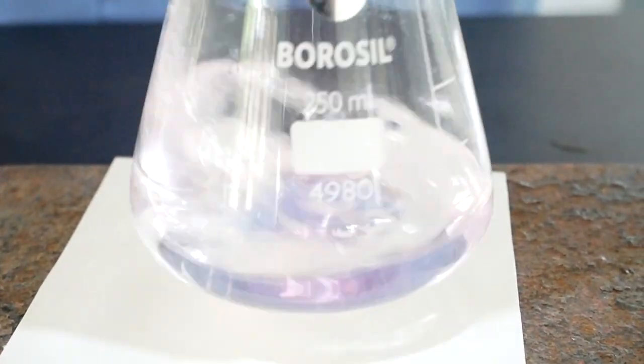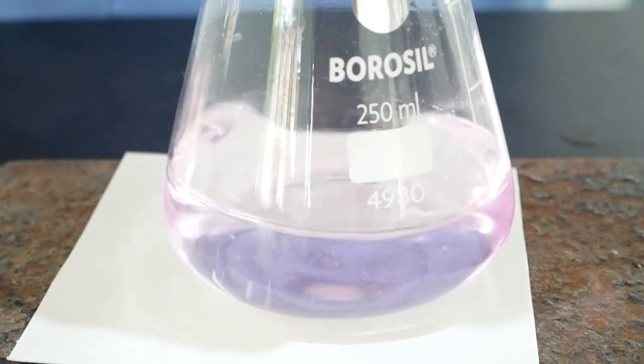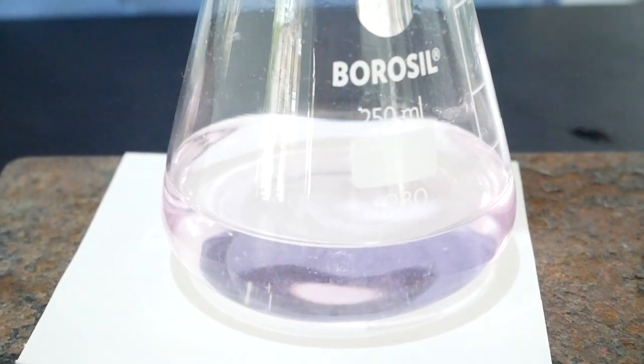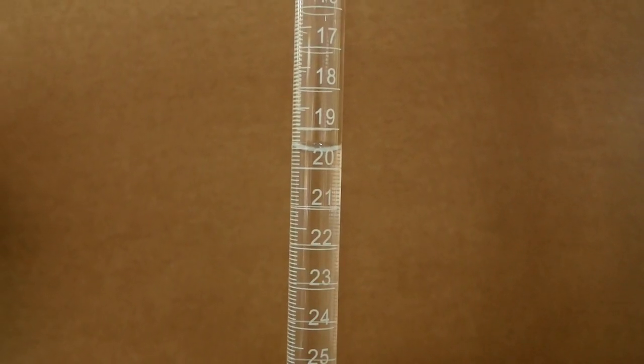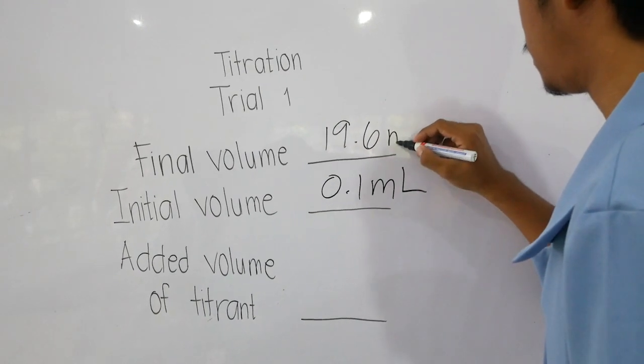The white paper below the flask makes it easy to see the pink coloration. Take note that we only want a very faint pink color to appear. When that happens, record the last burette reading as the final volume.